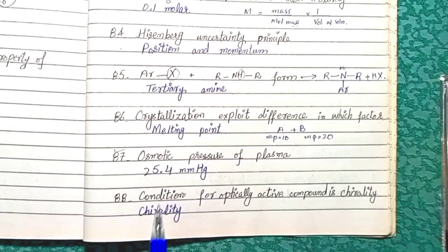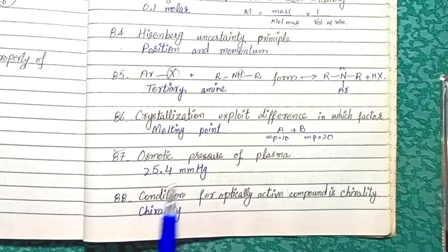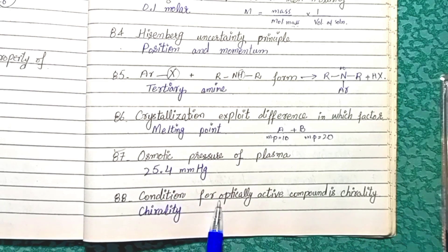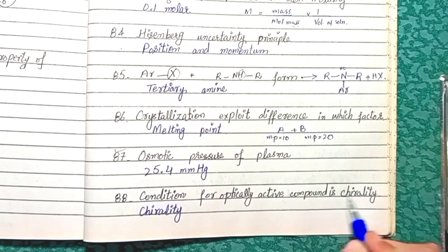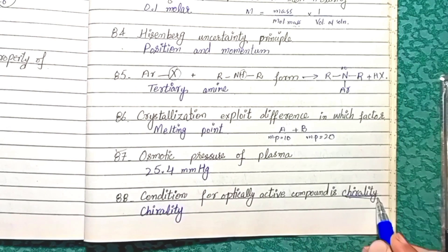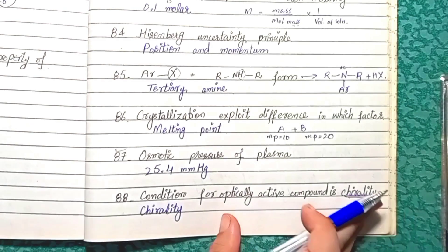Question 87: The osmotic pressure of plasma is 25.4 mm of mercury. Question 88: The condition for an optically active compound is chirality — only chiral compounds can be optically active.